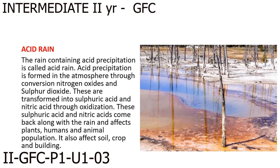Acid rain. The rain containing acid precipitation is called acid rain. Acid precipitation is formed in the atmosphere through conversion of nitrogen oxides and sulphur dioxide. These are transformed into sulphuric acid and nitric acid through oxidation. These acids come back along with the rain and affect plants, humans and animal population. It also affects soil, crops and buildings.